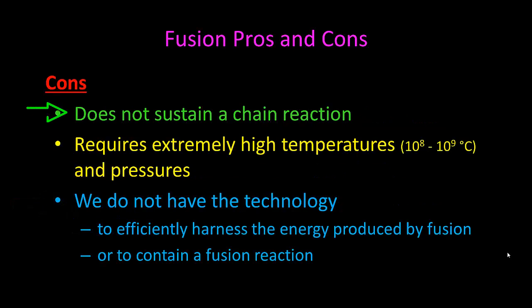The cons, it does not sustain a chain reaction. Okay, so the neutron that's produced isn't going into another tritium and deuterium to keep it going. Basically, it's the heat that you need to keep it going. It requires an extremely high temperature to get it started and pressure. We're talking about 10 to the 8th to 10 to the 9th degrees Celsius. That's pretty dadgum hot. We don't have the technology right now to efficiently harness the energy produced, and we can't contain it. Once it starts, it starts. It's hard to get it to stop because it produces so much heat. It will continue to go until it runs out of fuel, which would be the deuterium and tritium.